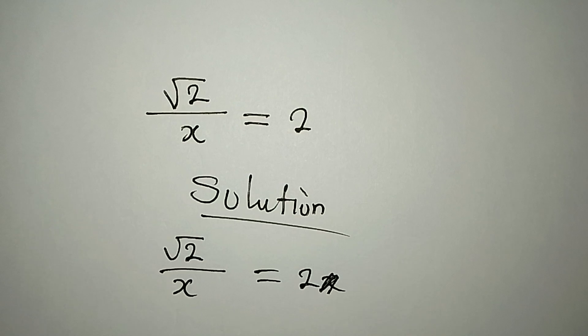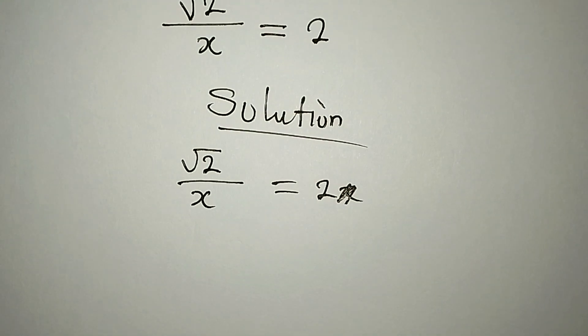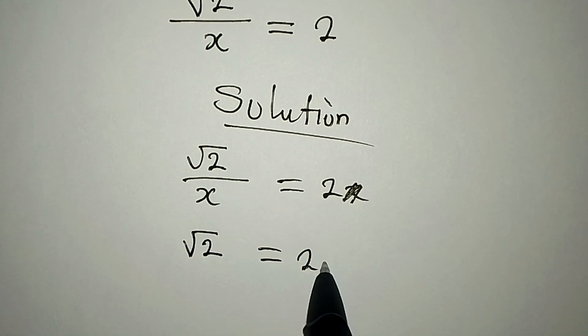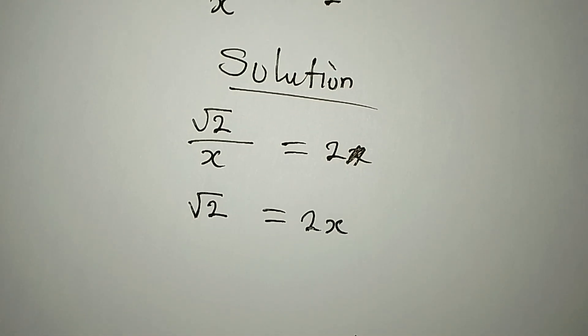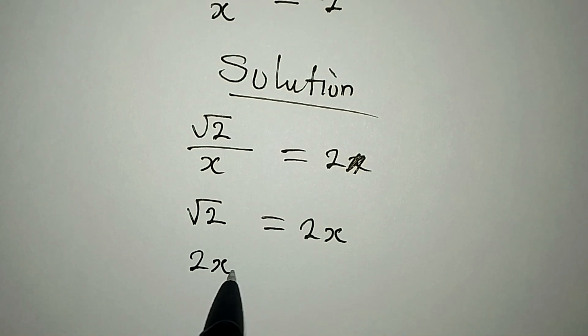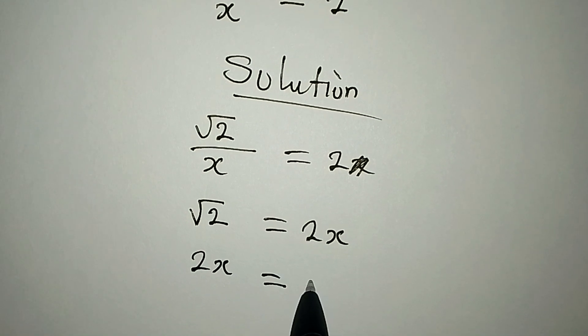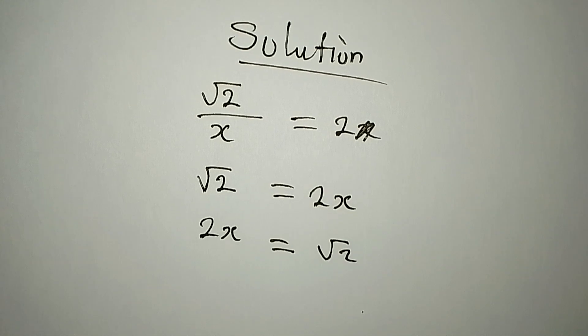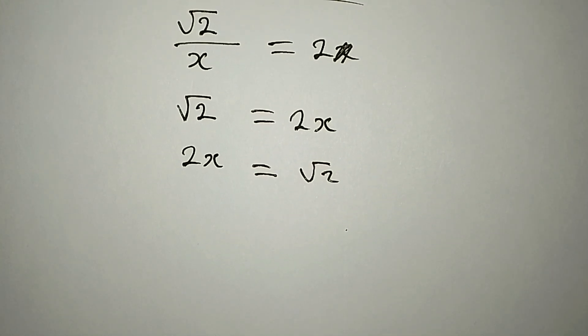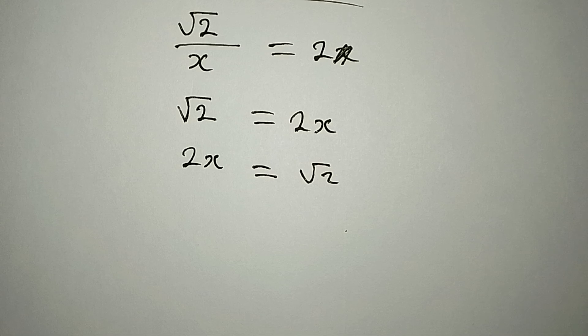It's equal to 2, there's no x over here. What do we do? Cross multiply, say that square root of 2 is equal to 2 times x, so it's 2x. And this equally means that 2x is equal to square root of 2.